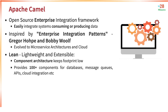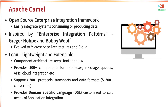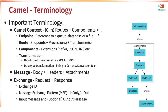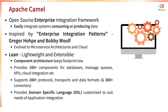The reason Apache Camel stays lightweight is its component architecture. There are hundreds of components provided for different databases, message queues, APIs, and cloud integrations. Apache Camel supports 200-plus protocols, transports, and data formats, and 300-plus converters between data formats. It also provides a domain-specific language — a DSL — customized for application integration needs. We have a couple more slides on Camel technology and architecture, but before that, let's get started with implementing a simple example with Apache Camel in the next step.